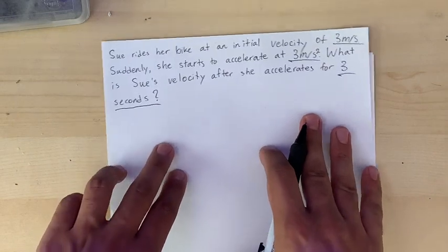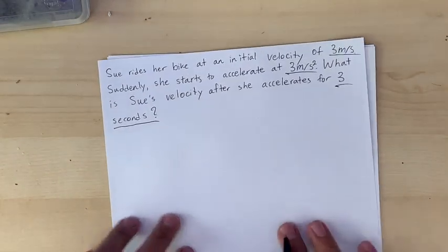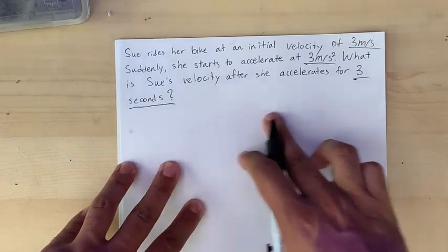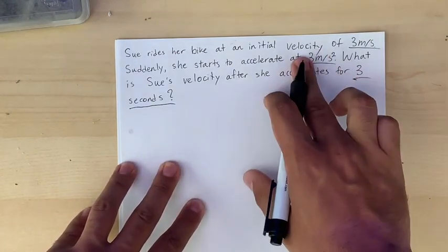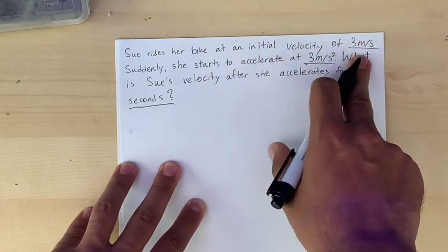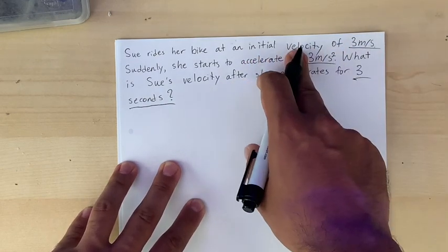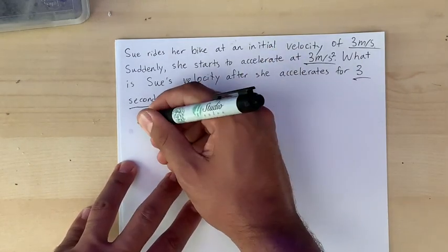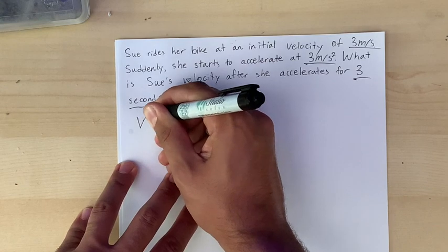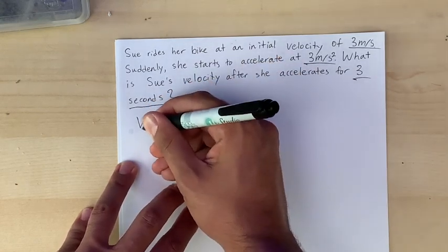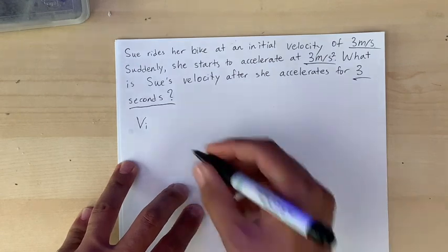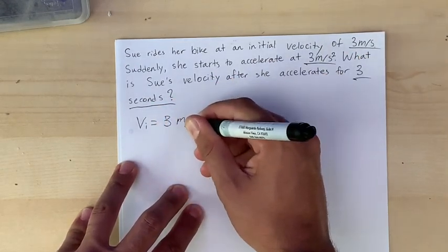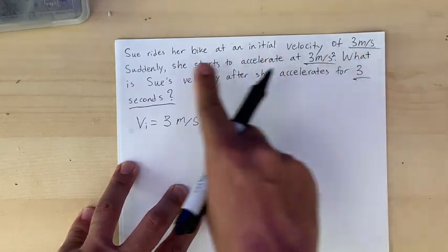So every single time I'm doing a physics problem, I write out every single number I found. So initial velocity of three meters per second. I'm gonna give it a variable right now. So velocity I always write with a V and initial I'll do VI. So V velocity initial, and that's equal to the number we found, three meters per second.